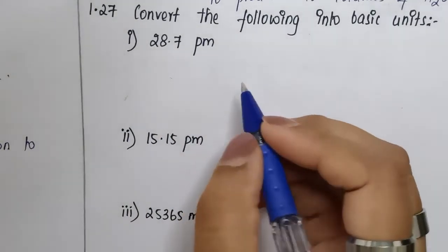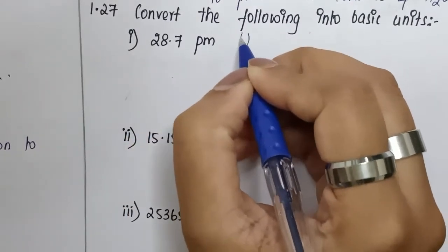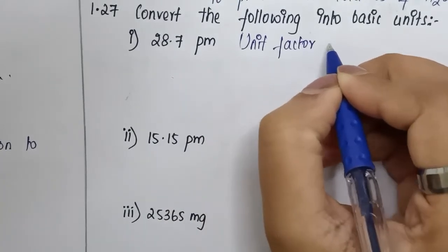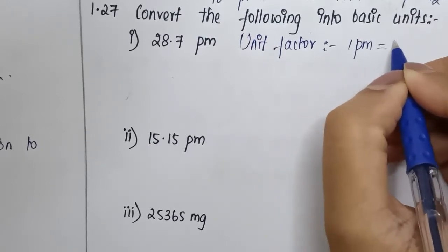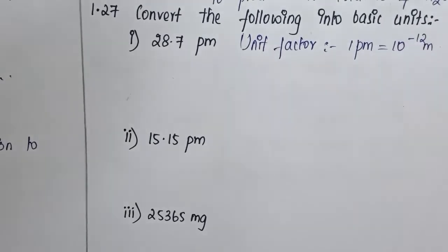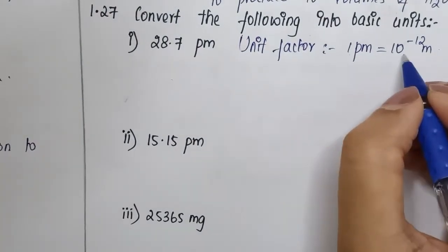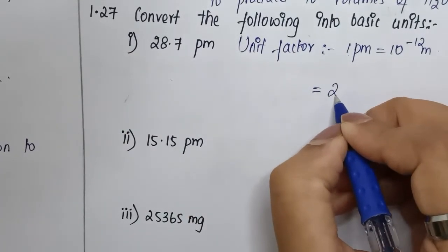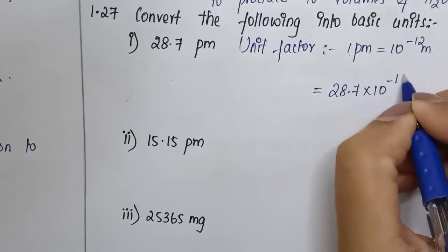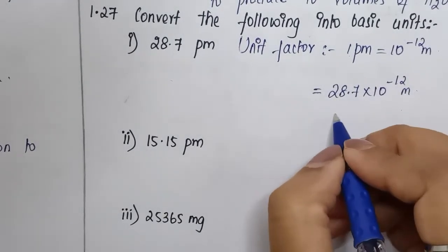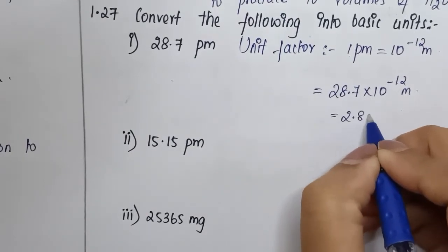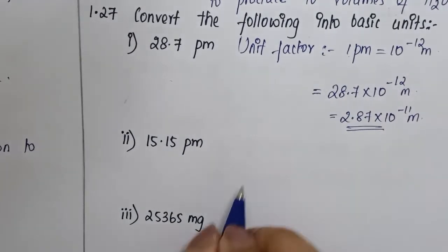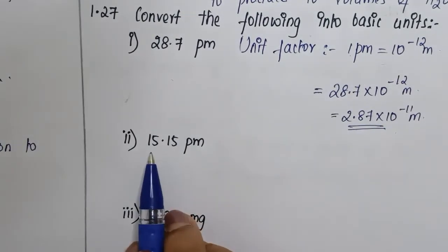When we take the unit factor, one picometer is equal to 10 to the power minus 12 meters. Therefore, 28.7 picometers will be equal to 28.7 into 10 to the power minus 12 meters. Writing this in significant figures, this will be 2.87 into 10 to the power minus 11 meters. Conversion is easy if we know the unit factor.